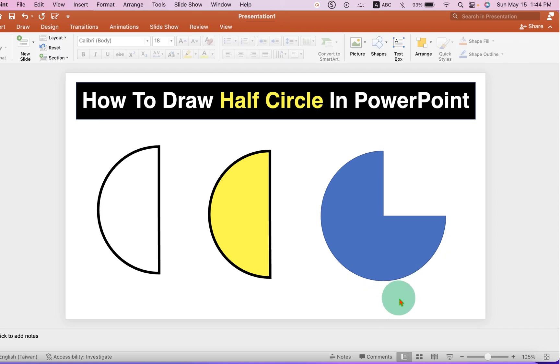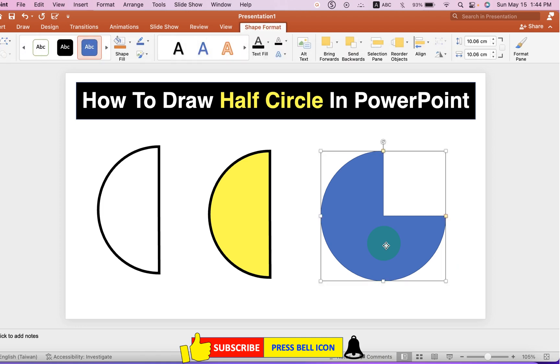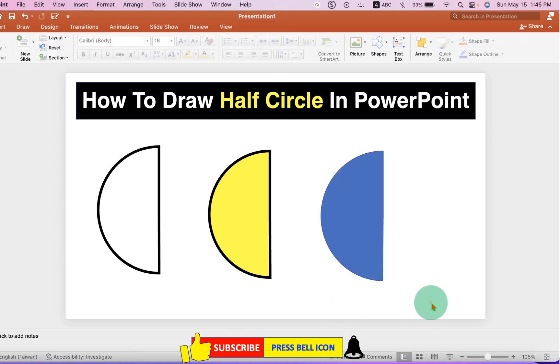Now we need to remove this portion from the circle. To do that, click on the shape and you will see here a yellow dot. Hold the yellow dot and drag it down to get the half circle.